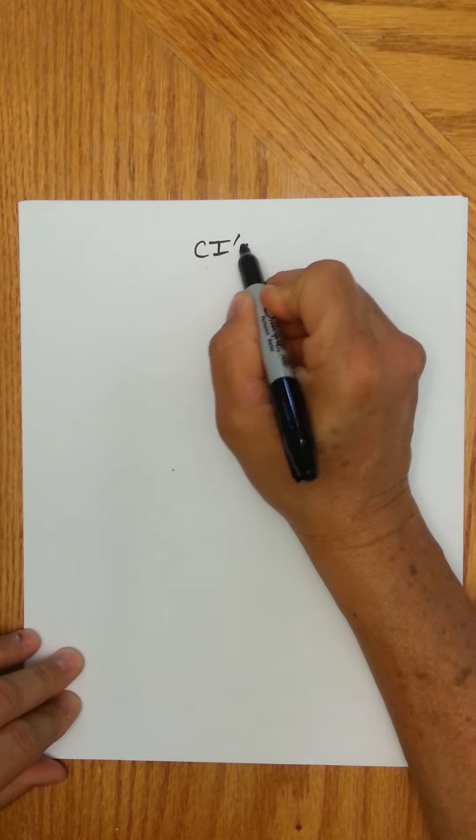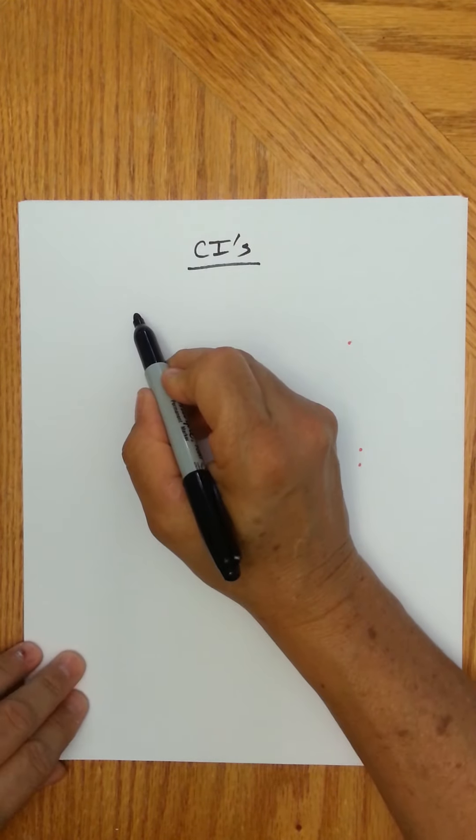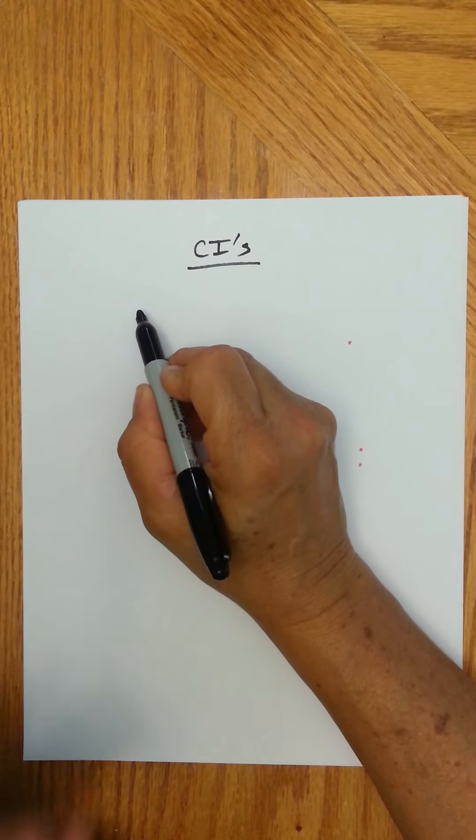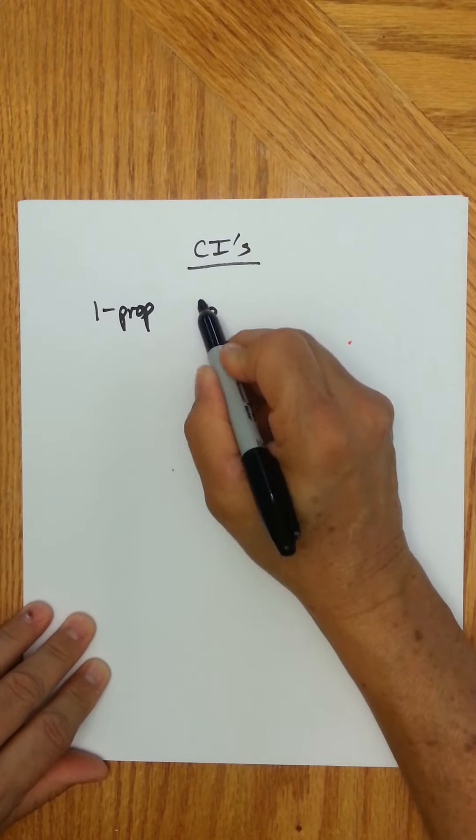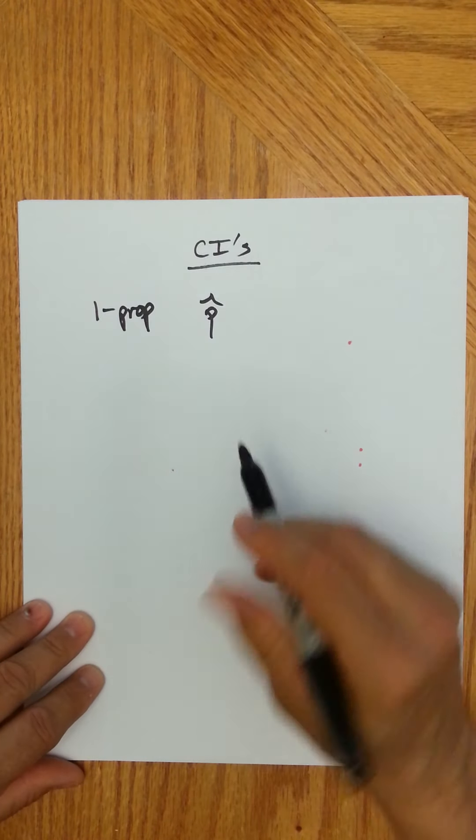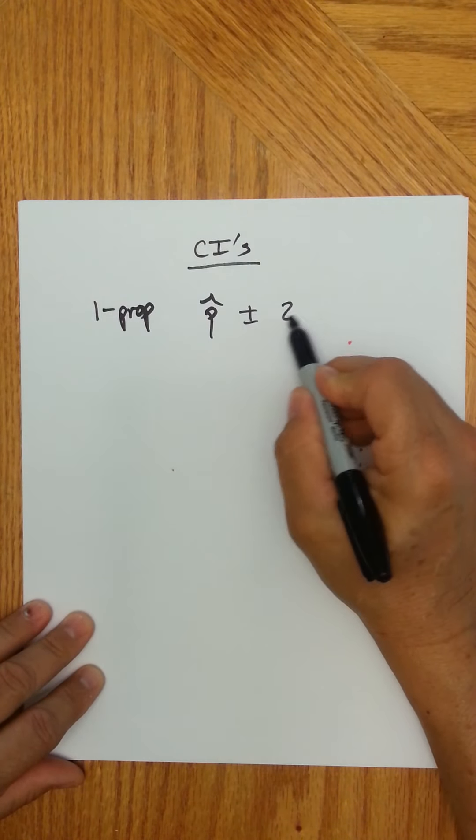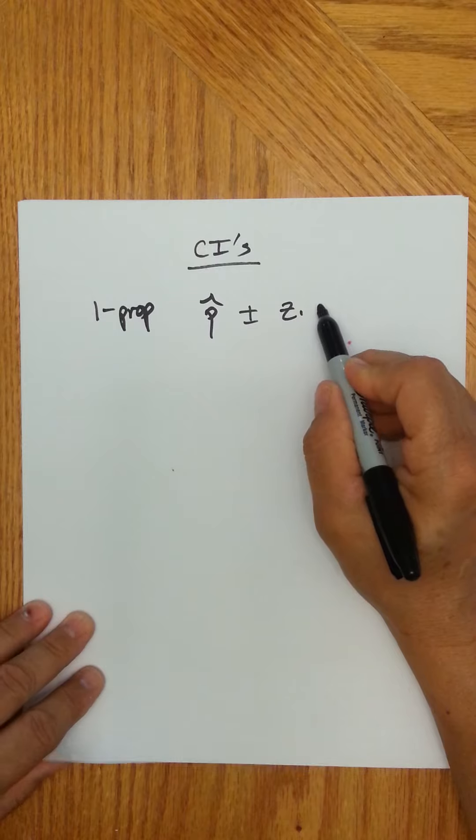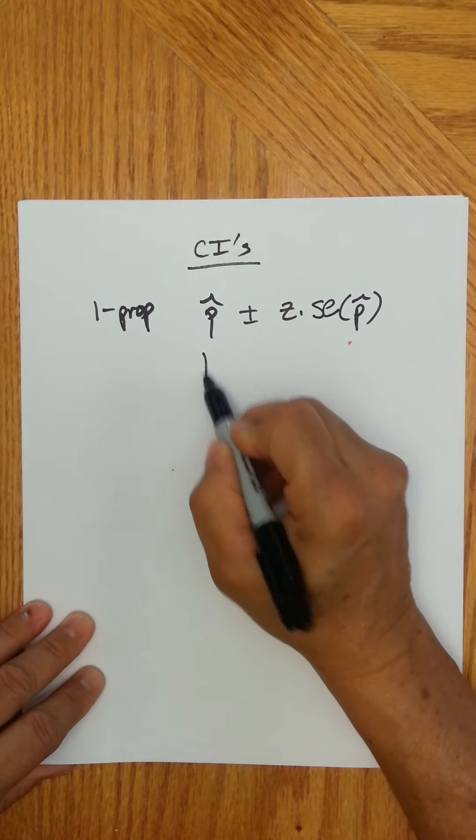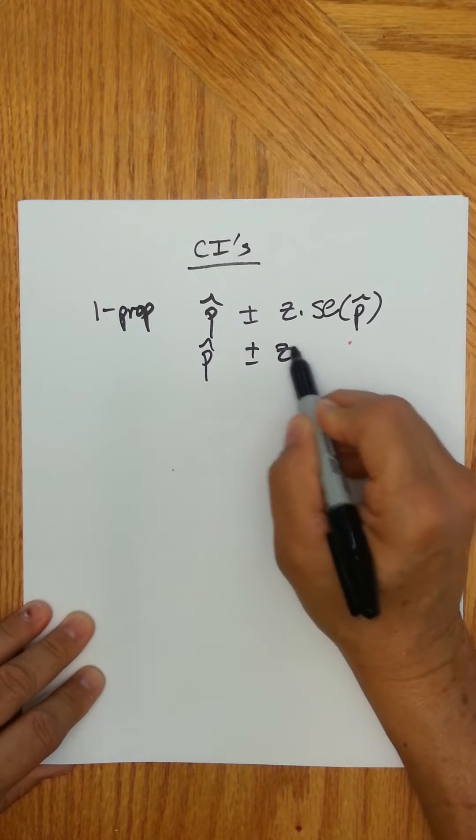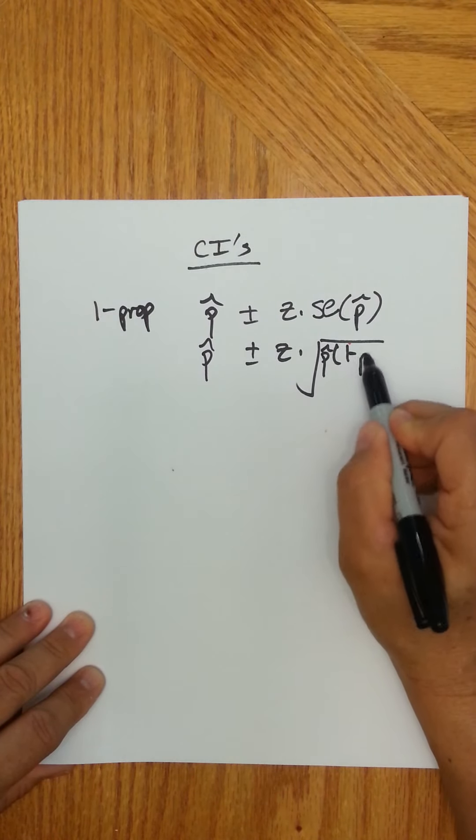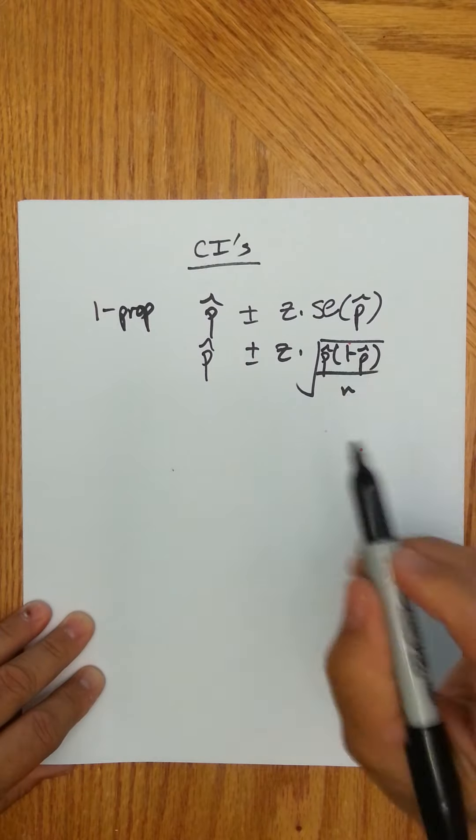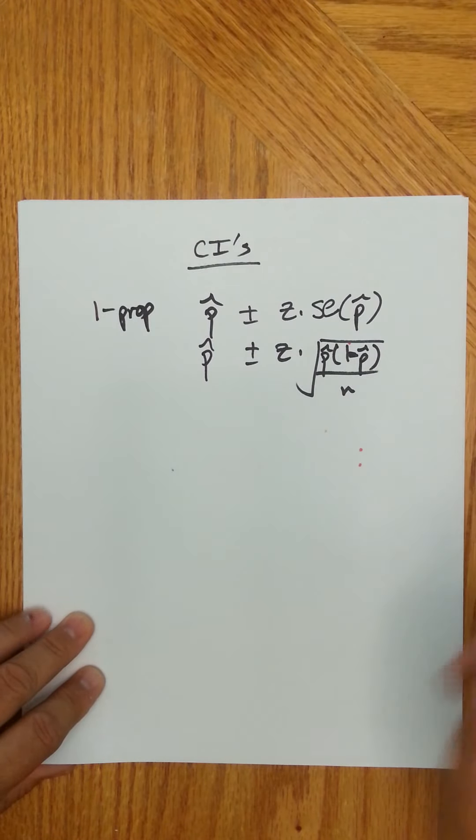So for confidence intervals, essentially now, remember before, let me just compare for one proportion, what you did is you found a sample proportion and you add or subtract a margin of error. And then filling that in you found p hat times 1 minus p hat over n, so the square root of p hat times 1 minus p hat over n.